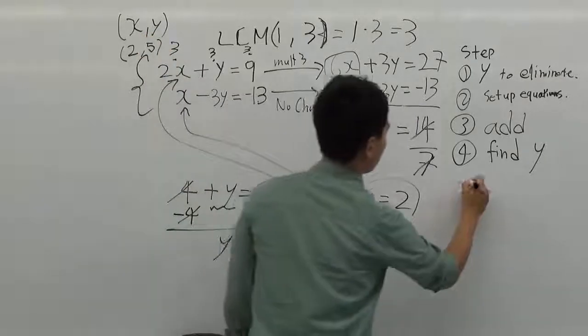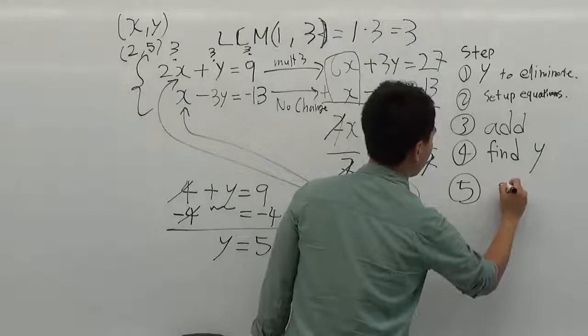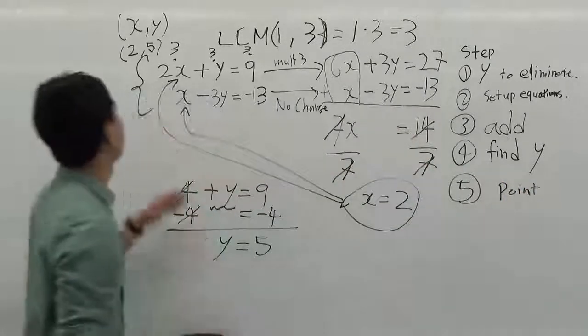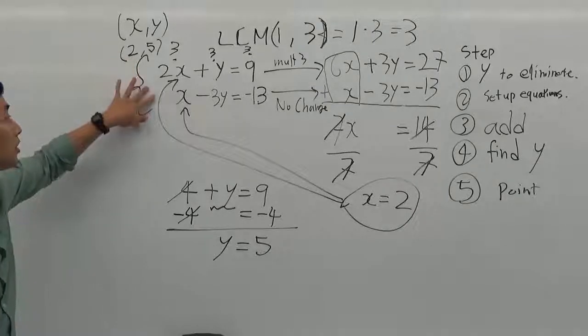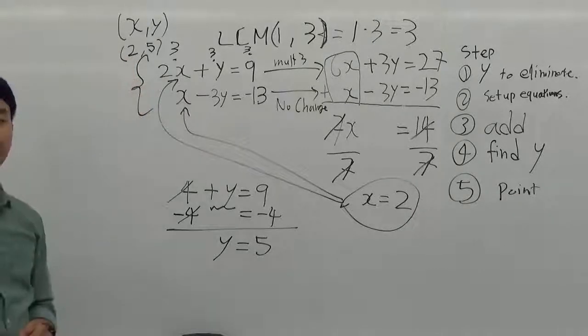This is just 5 steps. Make the point. Our answer will be the point 2 comma 5. It's the answer of the system. Thank you.